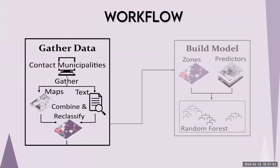We divided our workflow into two components. The first was to gather data by contacting and visiting webpages of municipalities and counties across North Carolina. Zoning data is typically divided into two formats: a zoning map, which tells you what areas are regulated to be zone A or zone B, and a zoning ordinance — a text document anywhere from 200 to 500 pages — which tells you what that zone actually means for that particular jurisdiction. We went through the process of gathering these zoning maps and ordinances and combined and reclassified them across the state of North Carolina.